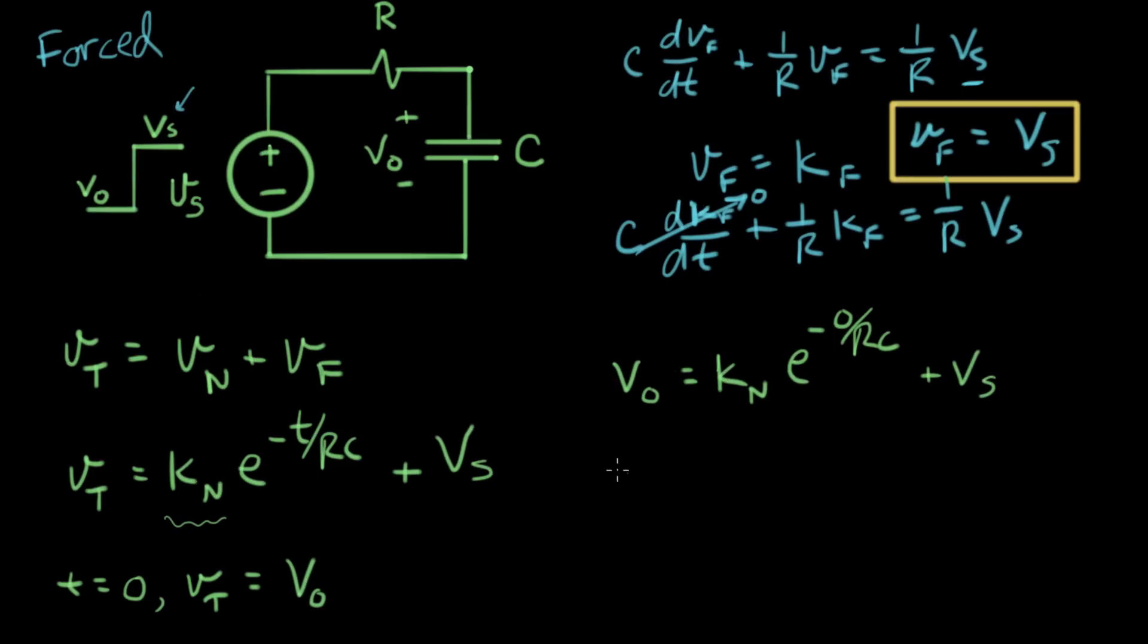So, now I've solved for K. And let's solve for KN. KN equals, this term is e to the zero is one. So, this term goes to one, so that says that it's KN plus VS, is this side, and I can write down here, V naught minus VS. So, now I've solved for KN.